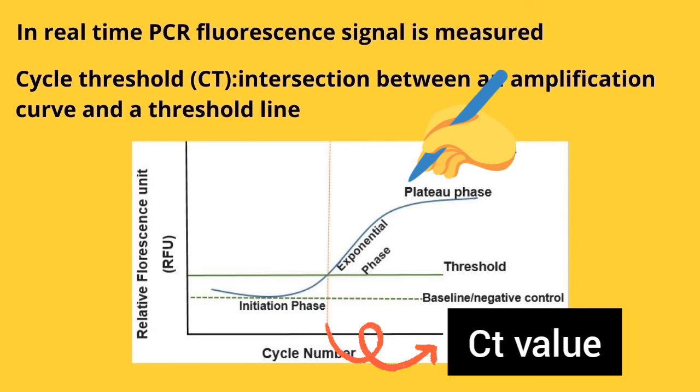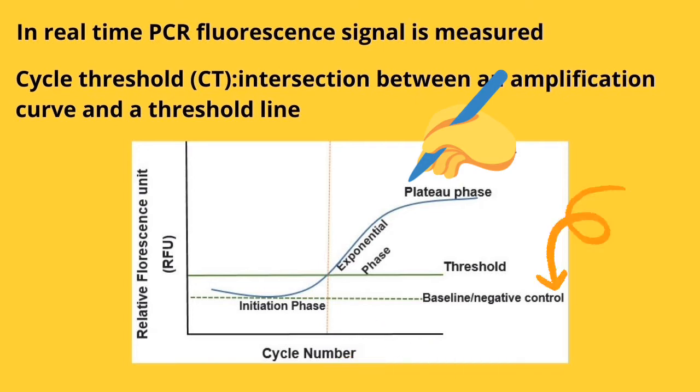Before we continue, you can see here other than threshold line we have a baseline. This baseline is normally generated automatically by real-time PCR application. Also, you can set it manually, especially with some SYBR assays.